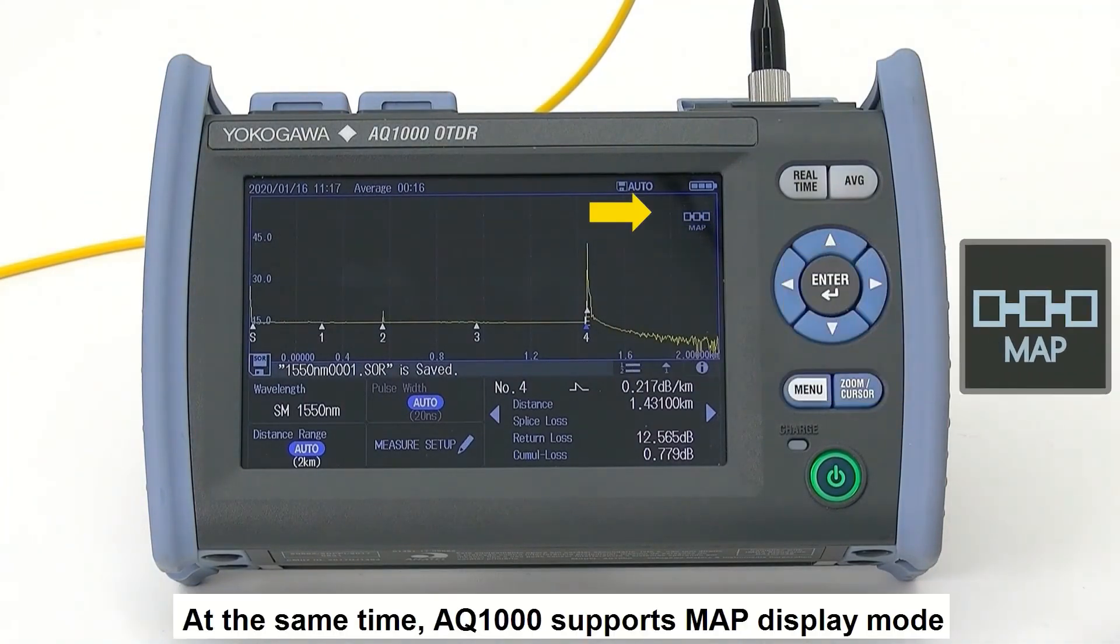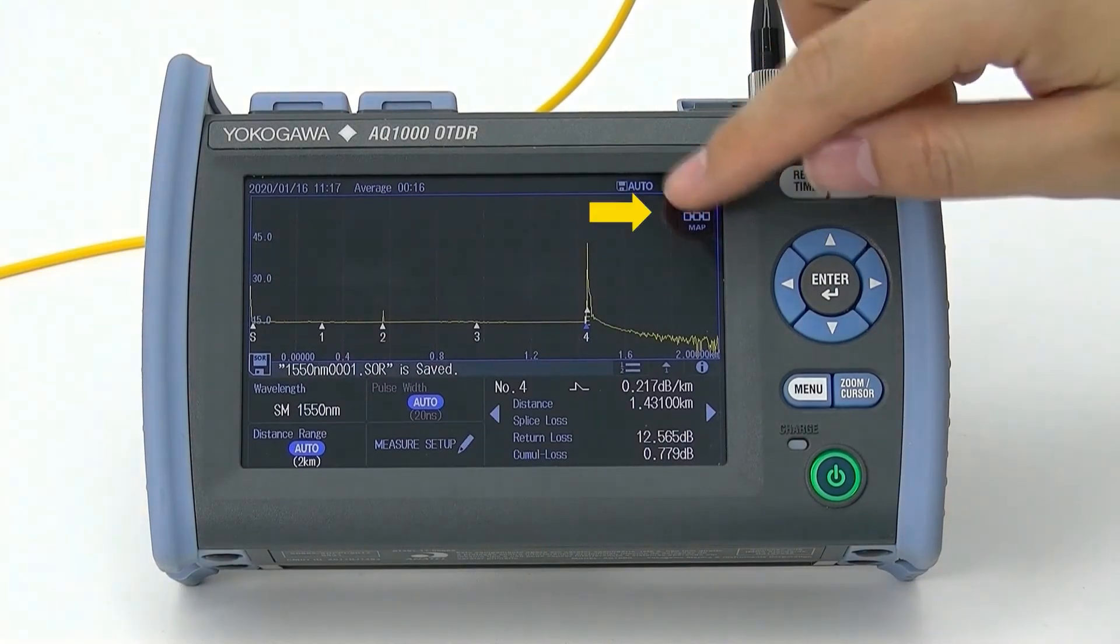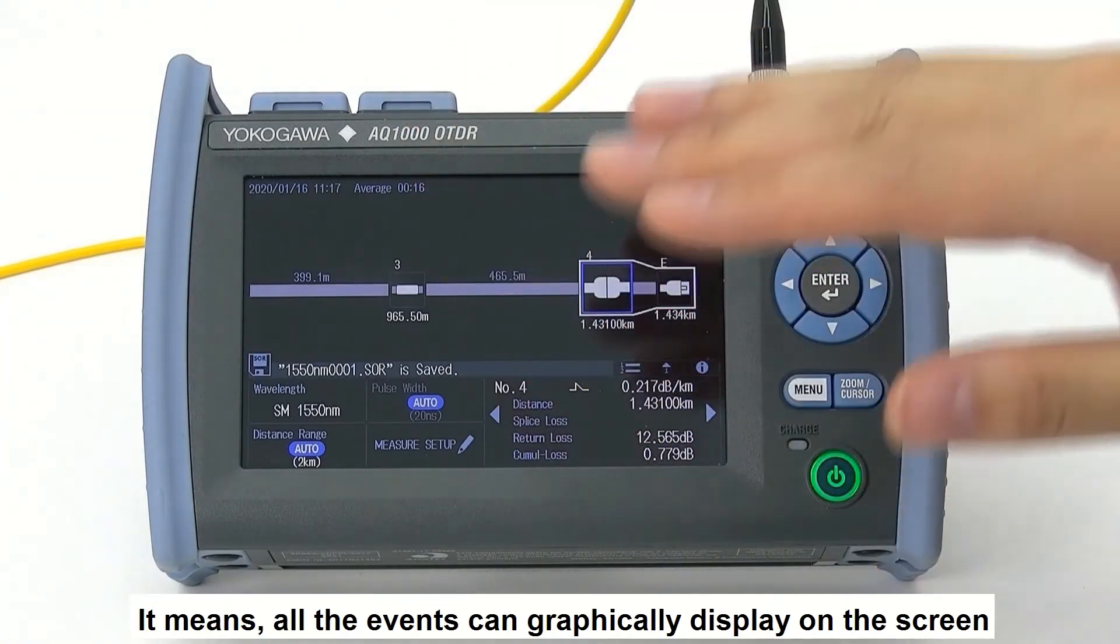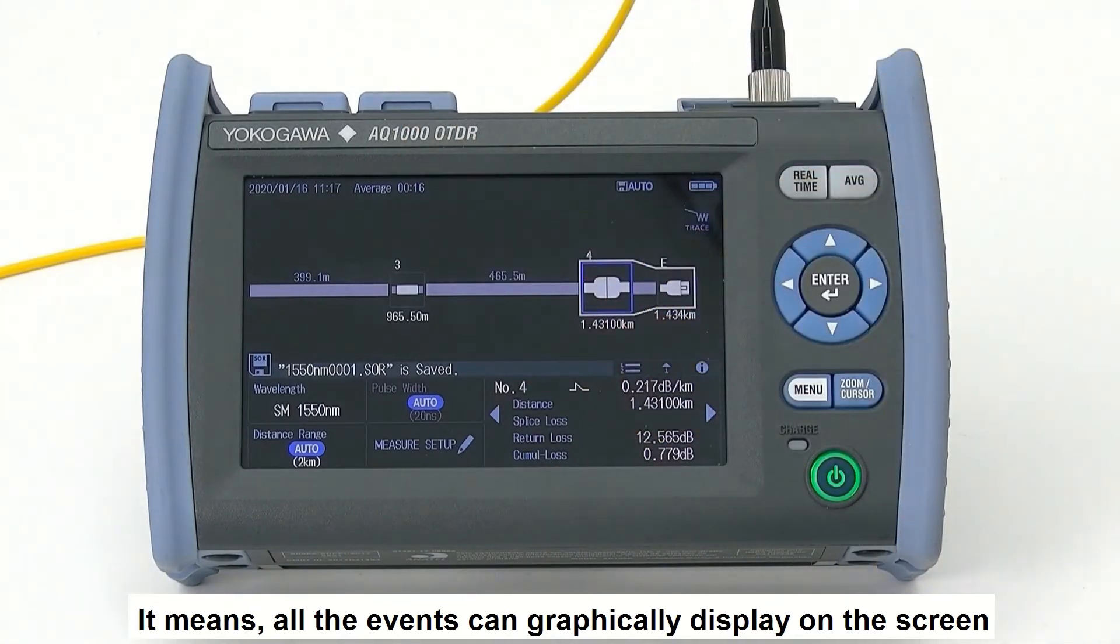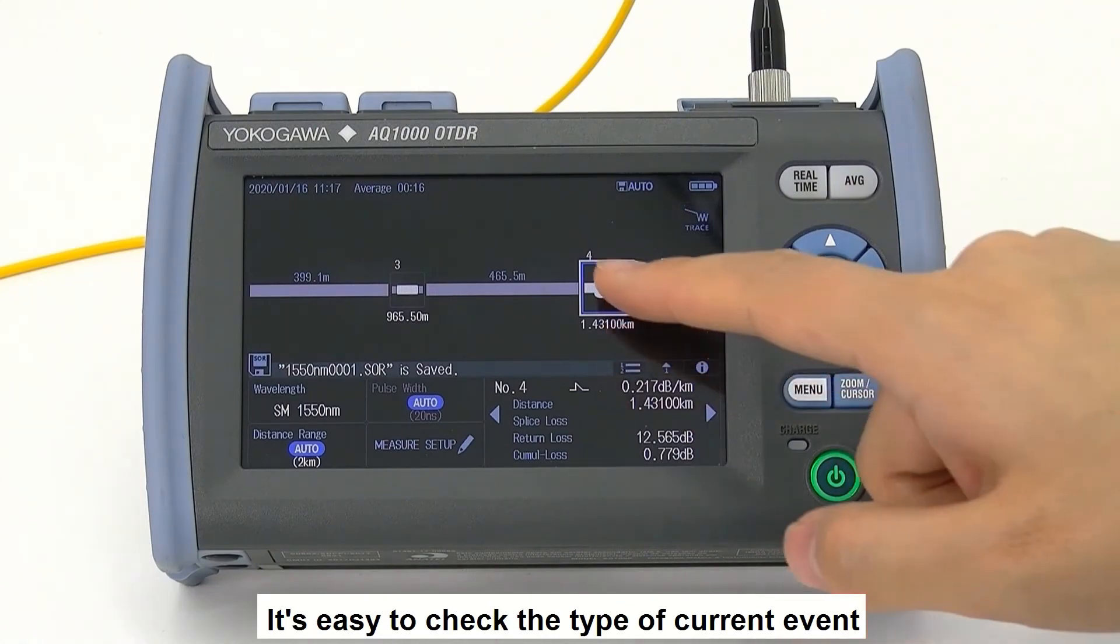At the same time, EQ1000 supports map display mode. It means all the events can be graphically displayed on the screen. It is easy to check the type of the current event.